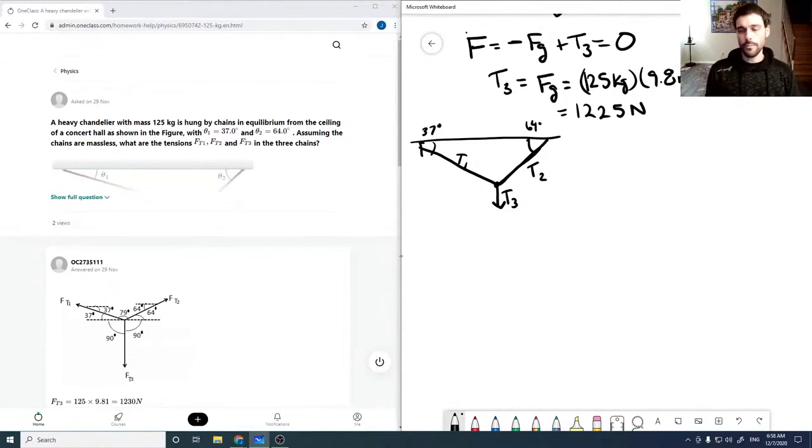we can separate into our components. So our force is going to be Fx x-hat plus Fy y-hat. And because nothing's moving, this is going to equal, well, it's always going to equal ma, but because it's not moving, it's going to equal 0. So that goes to 0 because there's no acceleration.